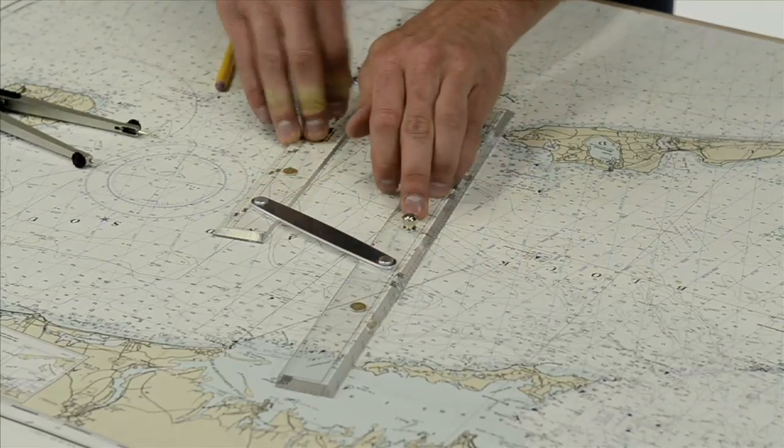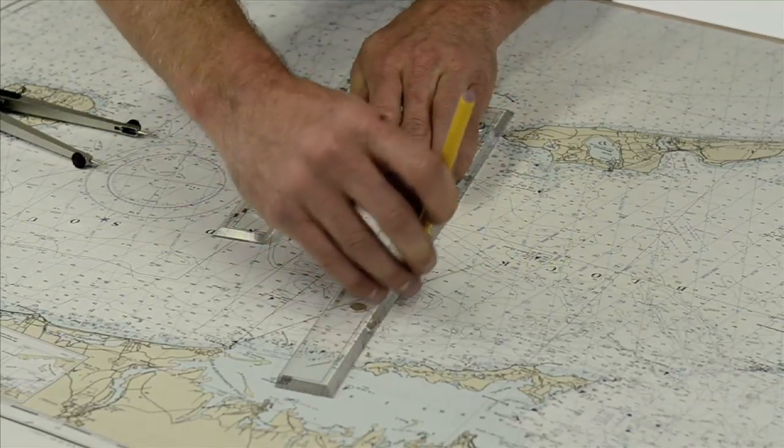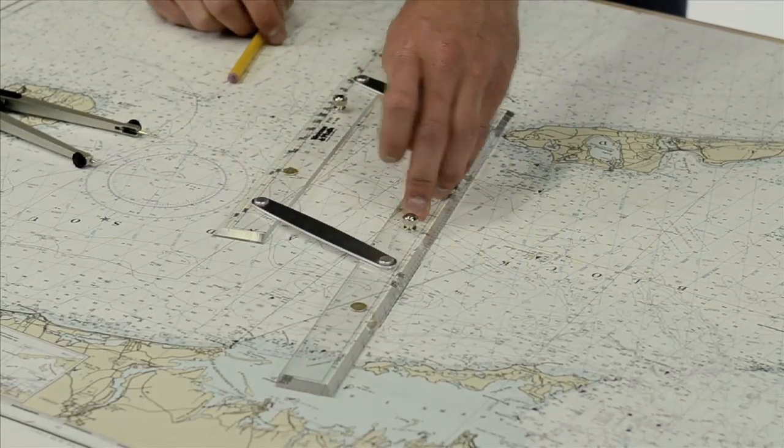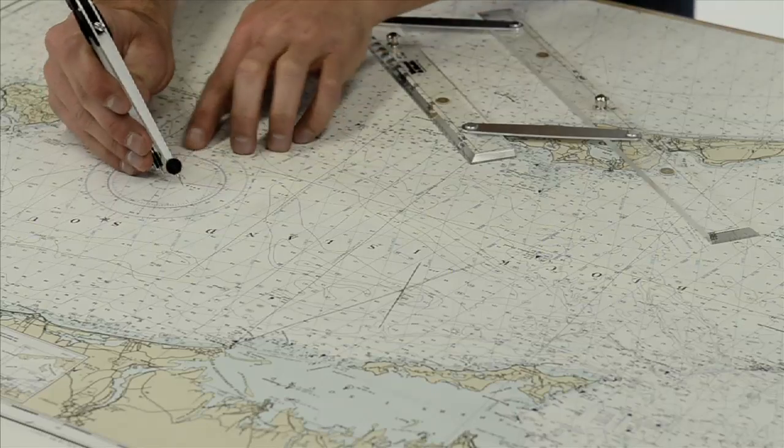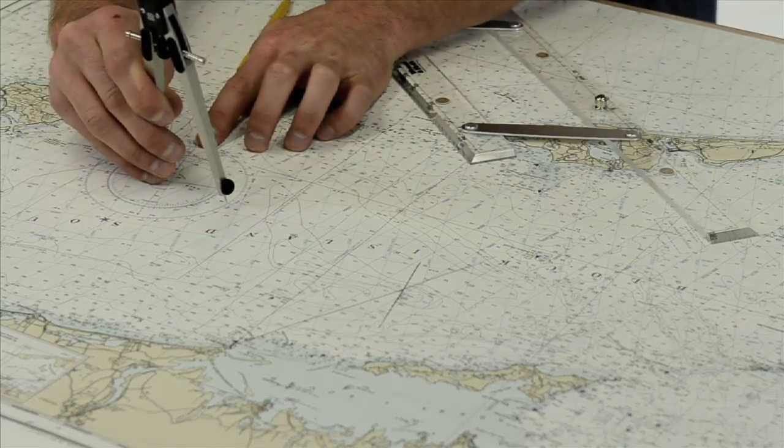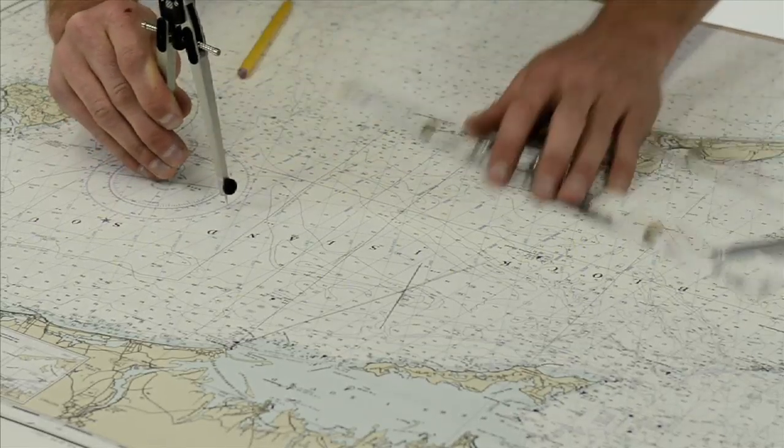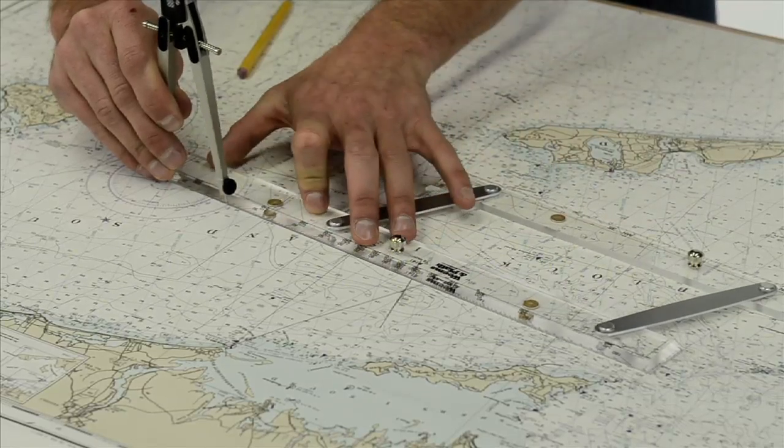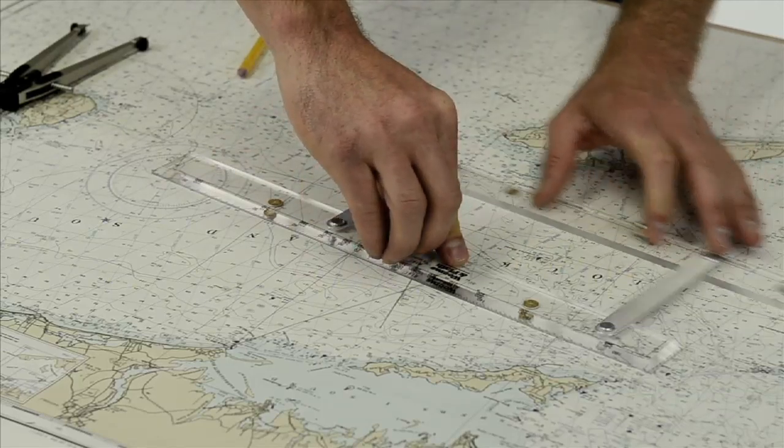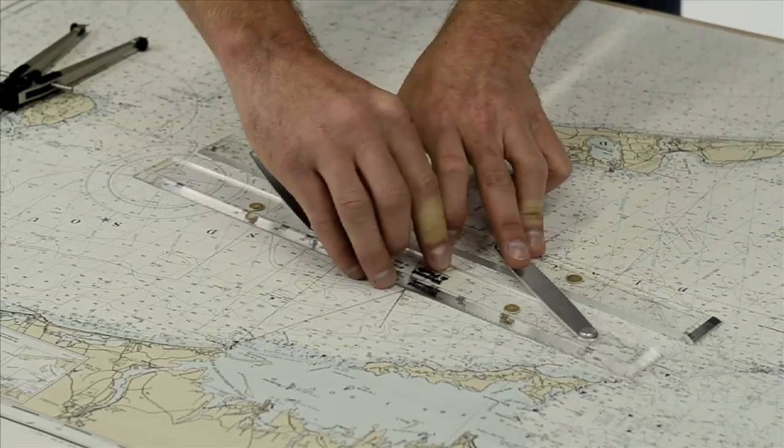There we are. We strike a line and we're on to Race Rock Light, 277 degrees. The center of the compass, 277 degrees, bump the parallel rules up next to it and we walk it from Race Point Light.